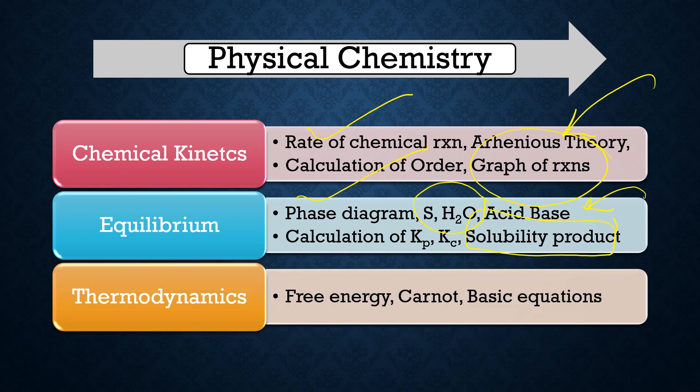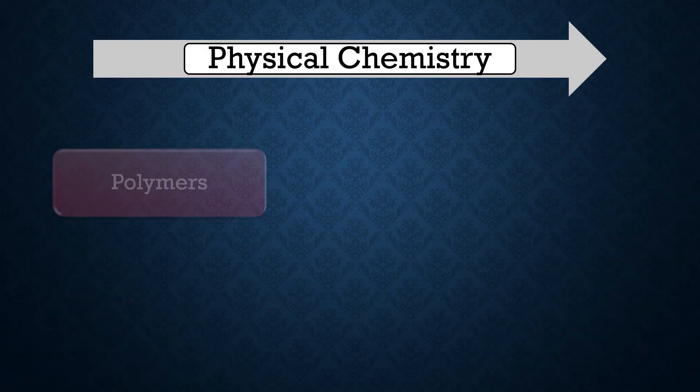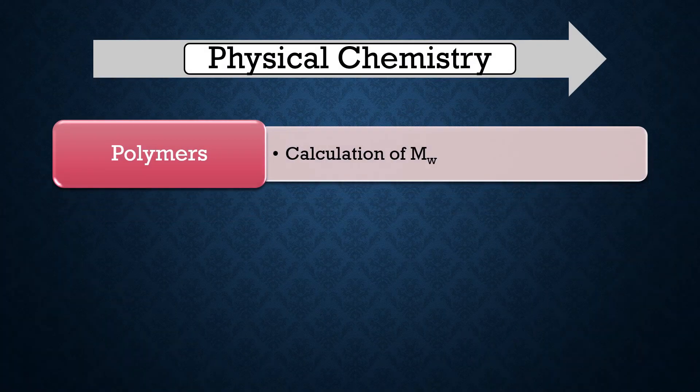For acid-base, learn the calculation of Kp, Kc, and Ksp — the solubility product. Calculations of molarity, molality, and normality are important for this portion. In thermodynamics, learn about free energy calculations — Gibbs free energy and Helmholtz free energy. Understand the criteria of spontaneity of reactions. The Carnot engine is very important. Also learn the basic equations for first order, second order, and zero order reactions.